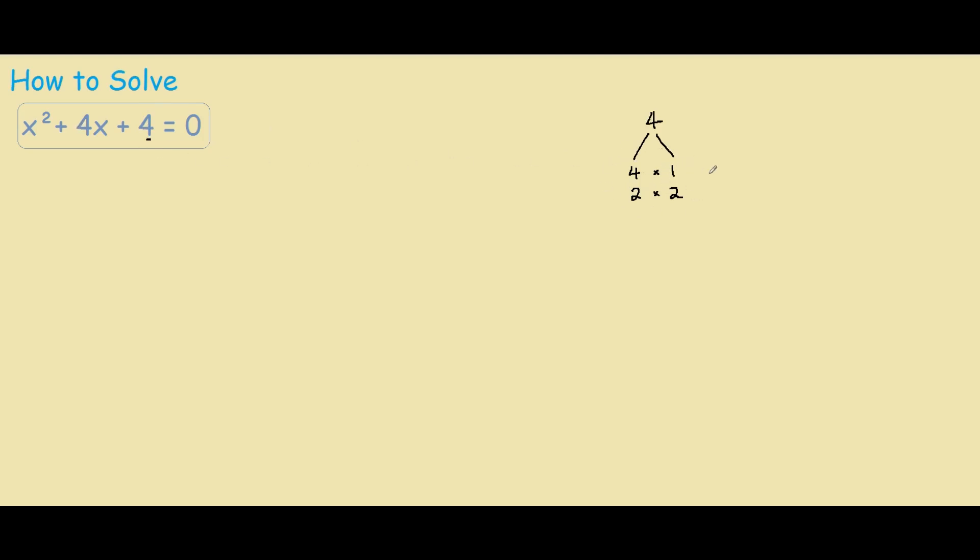So if we add 4 and 1, this would equal 5, so we don't want that because this is not 4. So you find 2 add 2 is 4, so the factors we want is 2 times 2.